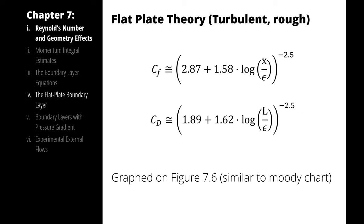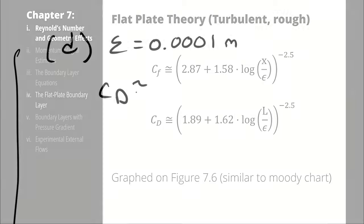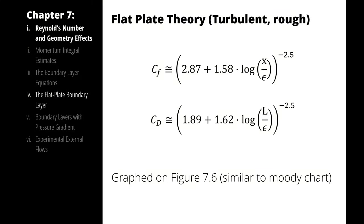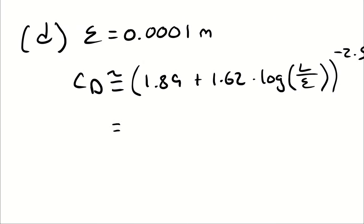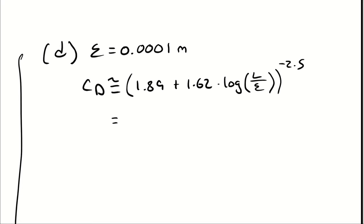So CD is going to be 1.89 plus 1.62 times log base 10 of the length of the plate over epsilon, quantity raised to the negative 2.5 power. I have a unitless proportion inside of the log base 10 term, which means that everything is going to be unitless, which means that my coefficient of drag will be unitless.